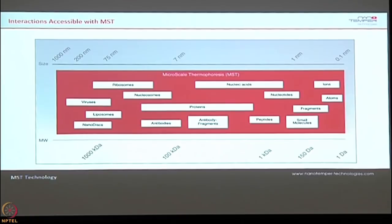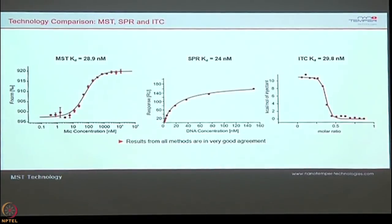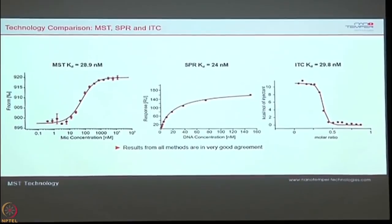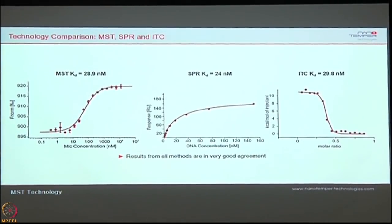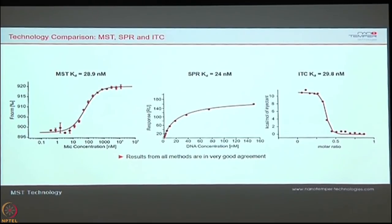This technique is comparable to SPR and ITC (isothermal calorimetry). We did a protein-DNA interaction study and got very similar KD values across all three techniques: MST gave 29 nanomolar, SPR gave 24 nanomolar, and ITC gave 30 nanomolar. Whatever binding affinity you determine in MST is very similar to ITC and SPR assays.